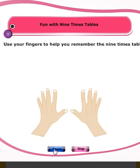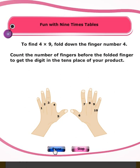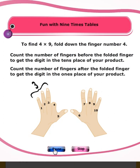Use your fingers to help you remember the nine times table. Number your fingers from 1 to 10. To find 4×9, fold down the finger number 4. Count the number of fingers before the folded finger to get the digit in the tens place. Count the number of fingers after the folded finger to get the digit in the ones place of your product. Try this for other multiplication facts of 9.